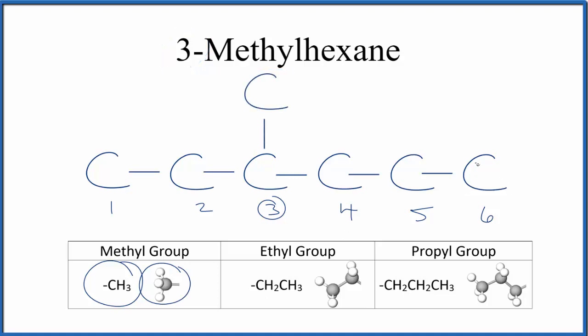So we have our alkane because of the A-N-E, all single bonds. The hex means we have the longest chain, six carbons. Now methyl, we put that on the third carbon, 1, 2, 3.